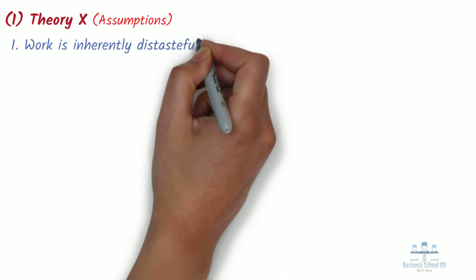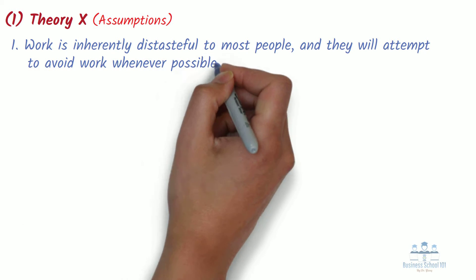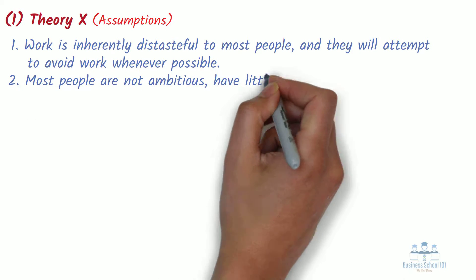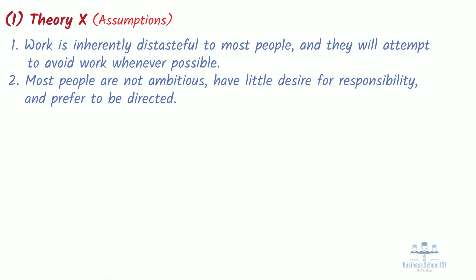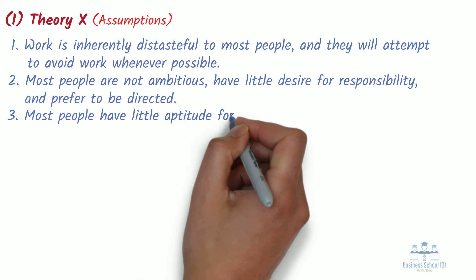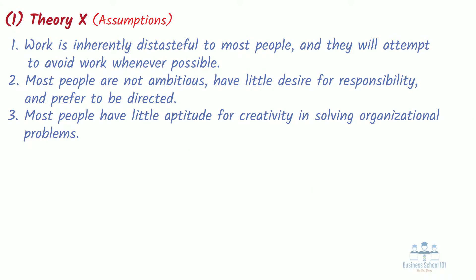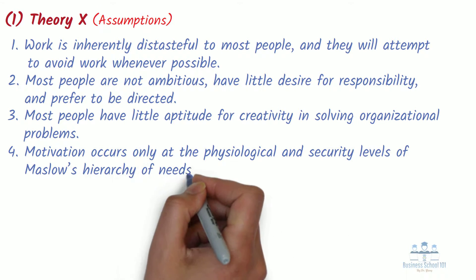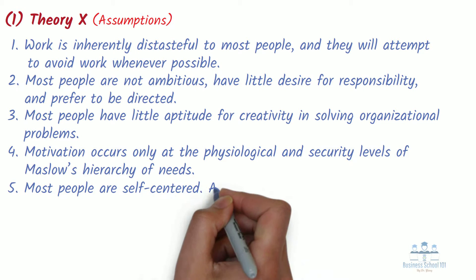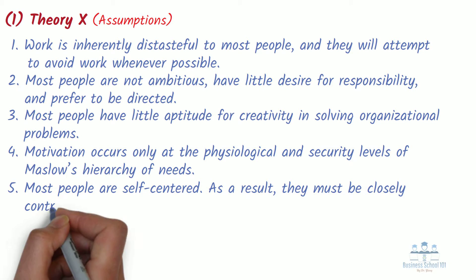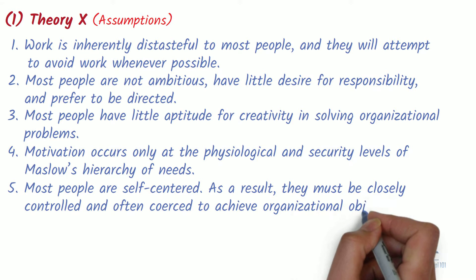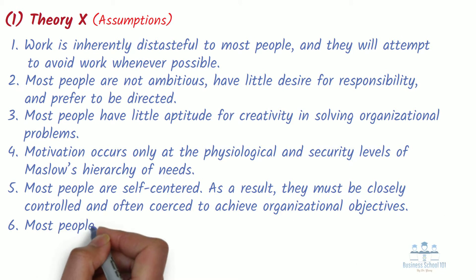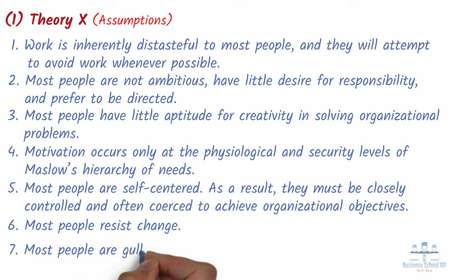First, Theory X. According to McGregor, Theory X management assumes the following. One, work is inherently distasteful to most people, and they will attempt to avoid work whenever possible. Two, most people are not ambitious, have little desire for responsibility, and prefer to be directed. Three, most people have little aptitude for creativity in solving organizational problems. Four, motivation occurs only at the physiological and security levels of Maslow's hierarchy of needs. Five, most people are self-centered, and as a result they must be closely controlled and often coerced to achieve organizational objectives. Six, most people resist change. Seven, most people are gullible and unintelligent.